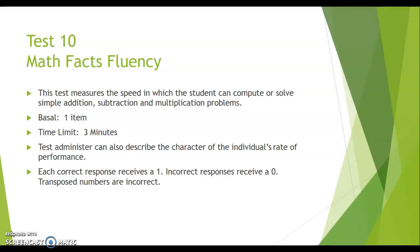The basal is one item. And the test administrator can also describe the character of the individual's rate of performance. Each correct response receives a one and then the incorrect response receives a zero. Transposed numbers are incorrect. So if a student, for example, if the answer is 12 and the student writes 21, that would mean the student is incorrect on that response.